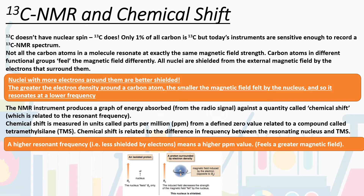NMR is for nuclei that quite often have odd mass numbers. Carbon-12, with its even mass number of 12, doesn't possess an overall nuclear spin. But carbon-13 does. Carbon-13 is an isotope of carbon, and only about 1% of carbon is actually carbon-13. However, today's instruments are sensitive enough to record the carbon-13 spectrum even though it's only 1% of the carbon.